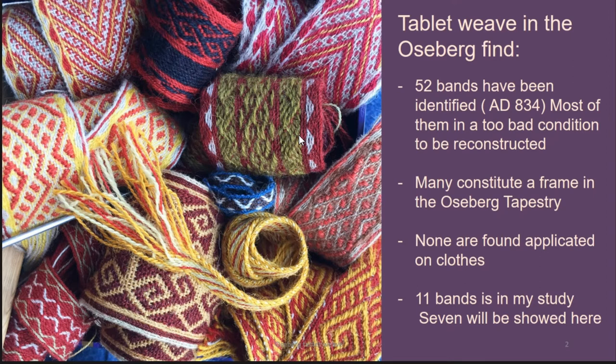It is very special because it also has very different techniques, not like the Birka find, where it is mostly brocaded with silver and silk. Most of these 52 bands are in a really bad condition. But still, I try to do something about it. Many of these bands constitute a frame in the Oseberg tapestry, but it is very interesting to know that none of the tablet weave bands are found on clothing in the Oseberg ship.